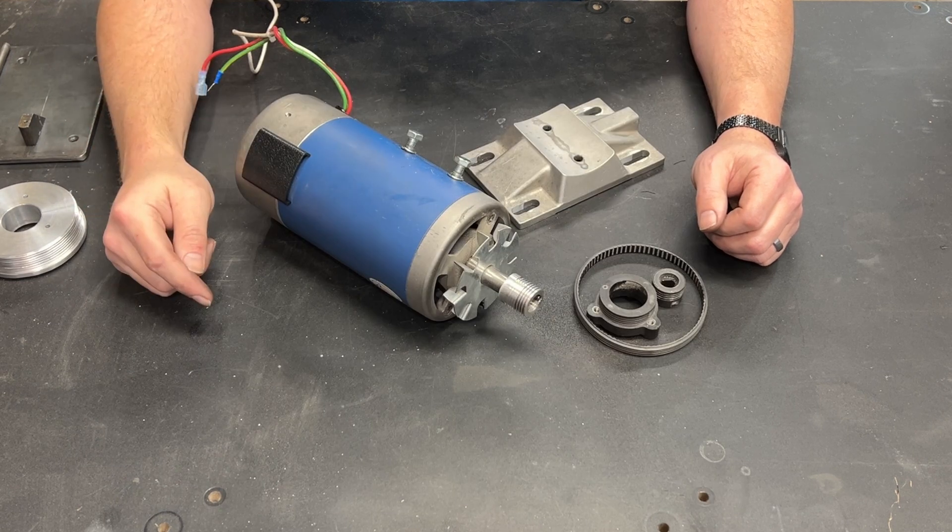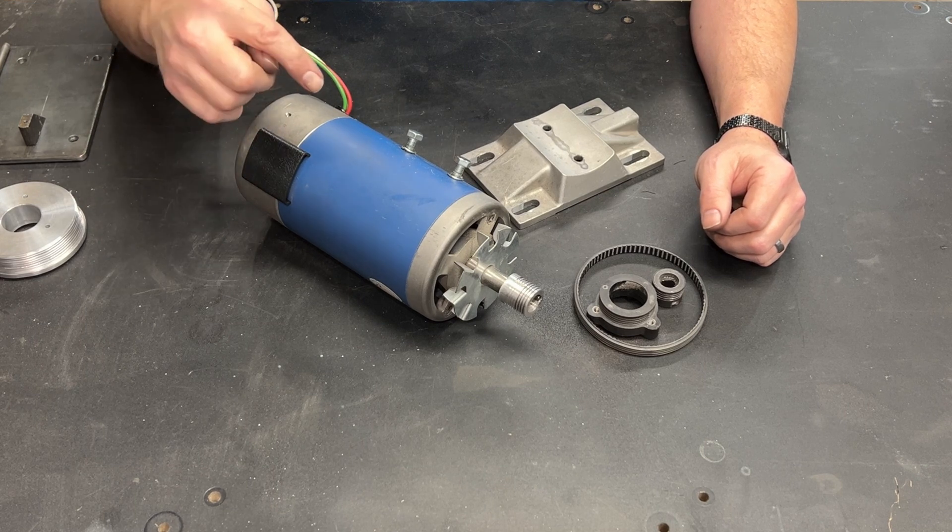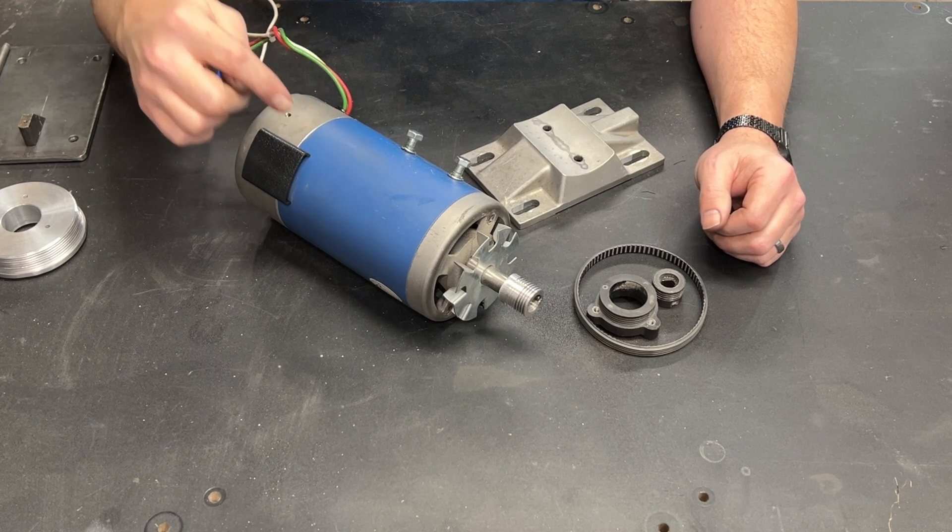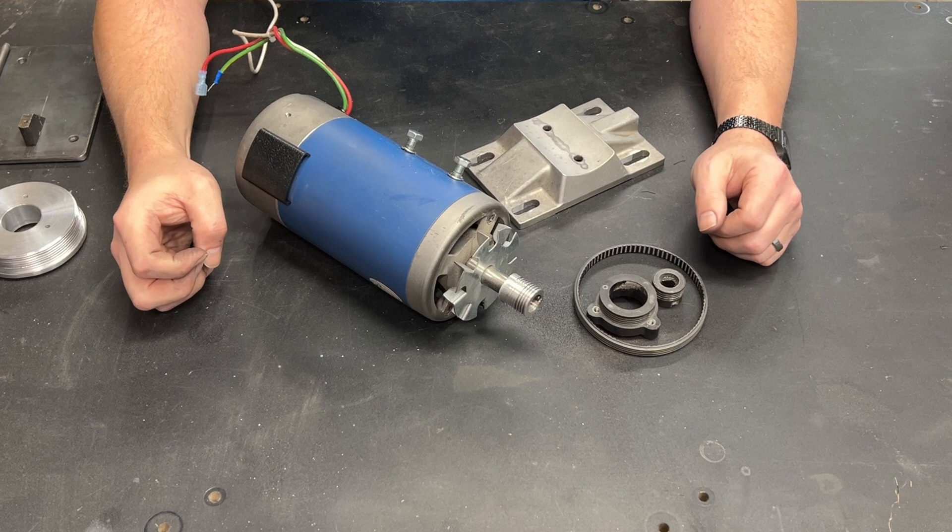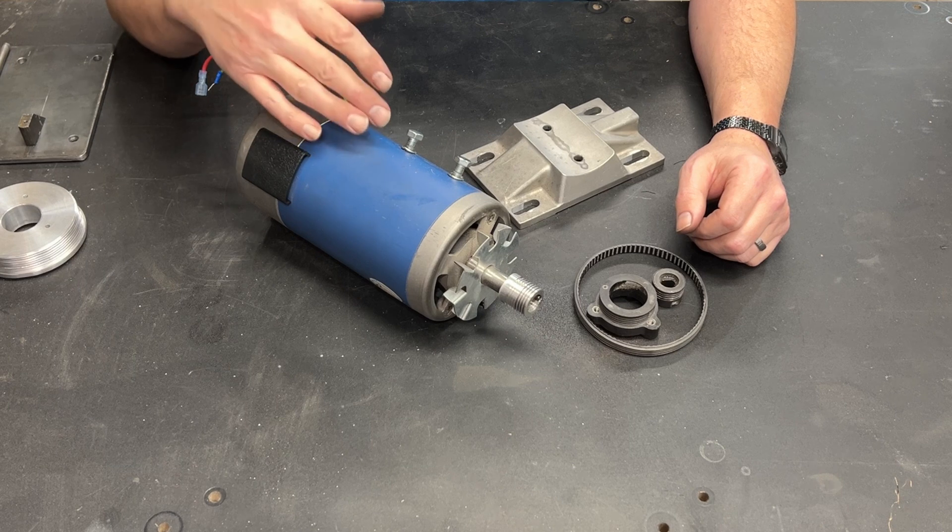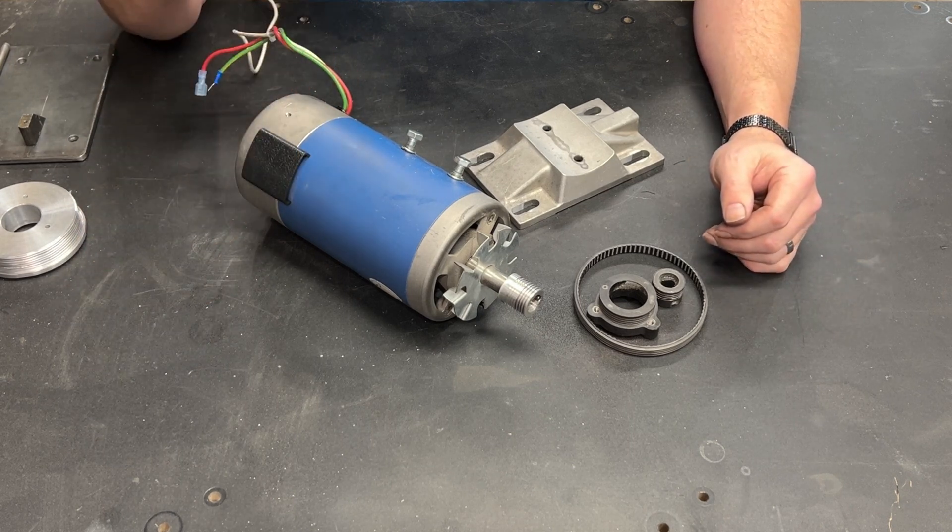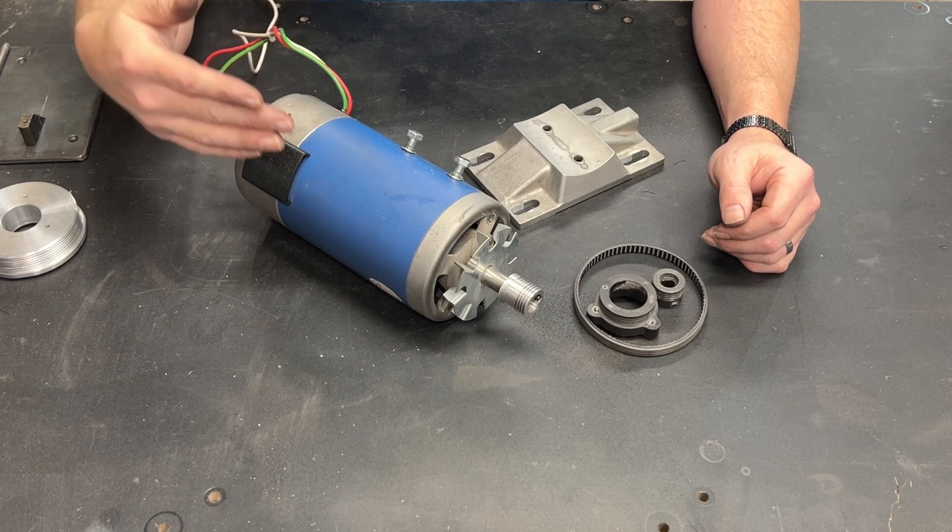The second mistake that I made, and this was definitely a bigger one, was not gearing the motor down enough. I get this all the time where people are like, okay, because I can go variable speed, I don't need to worry about gearing. And in doing so, you leave a ton of torque on the table.